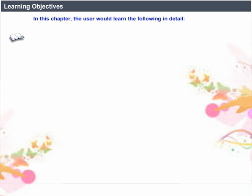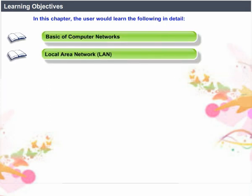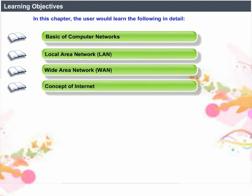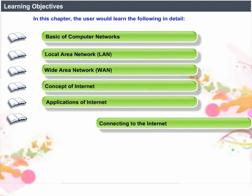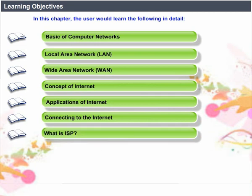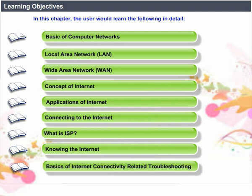Learning Objectives. In this chapter, the user would learn the following in detail: Basics of Computer Networks, Local Area Network (LAN), Wide Area Network (WAN), Concept of Internet, Applications of Internet, Connecting to the Internet, What is ISP, Knowing the Internet, and Basics of Internet Connectivity-Related Troubleshooting.